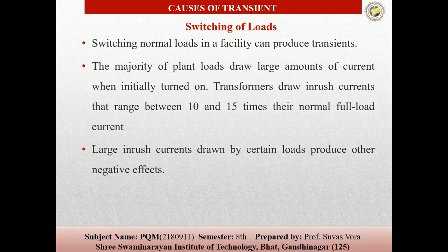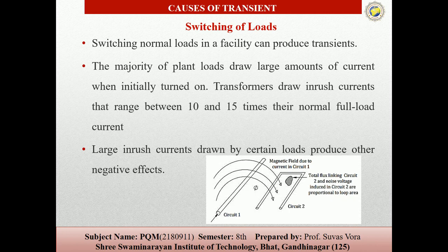The large inrush current drawn by certain loads produces negative effects. The magnetic field due to the transient induces large potentials in the power lines by mutual inductance. When the area of the surge or the flux is linked with a large area, noise is induced; this can be reduced by using a twisted pair of wire, which keeps the magnetic field boundary small.